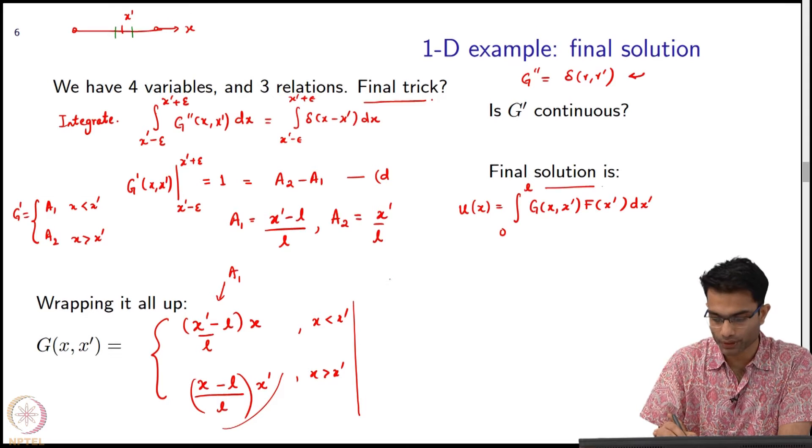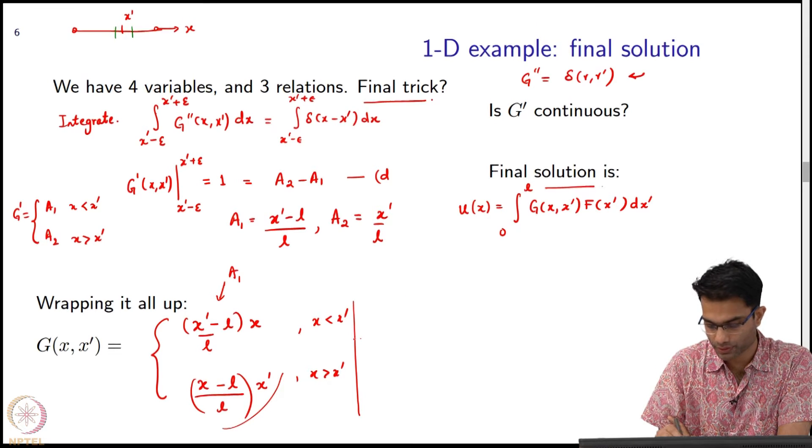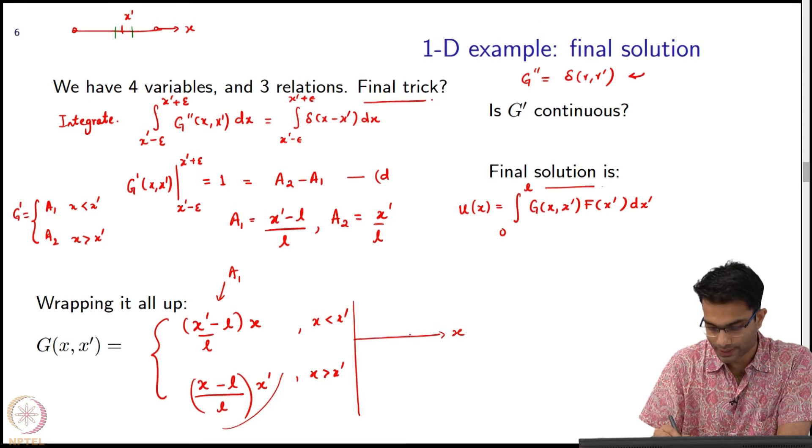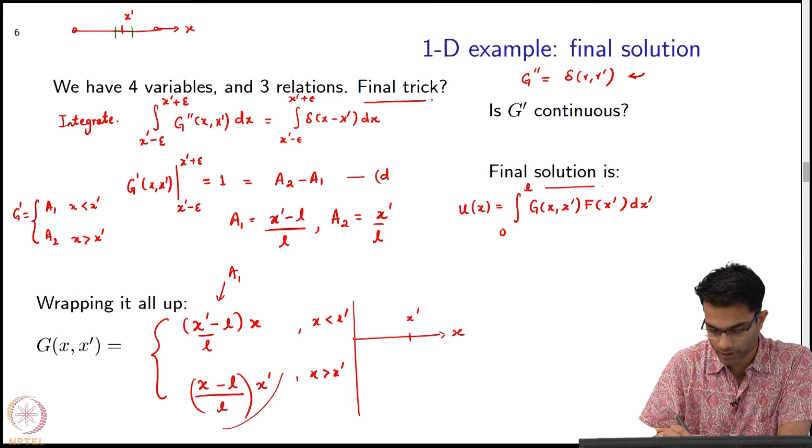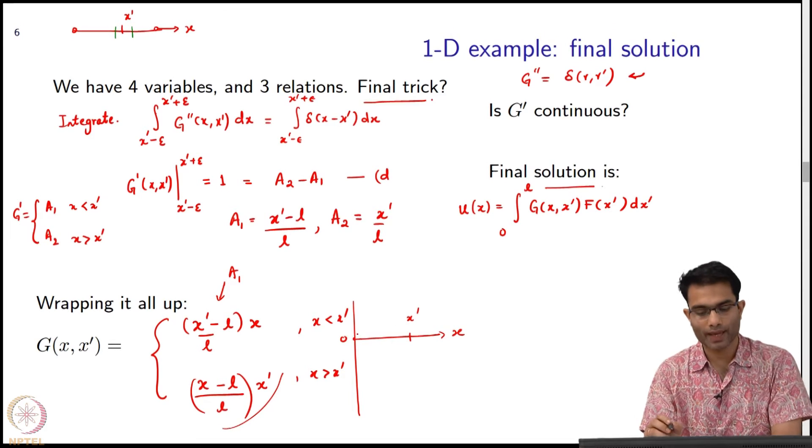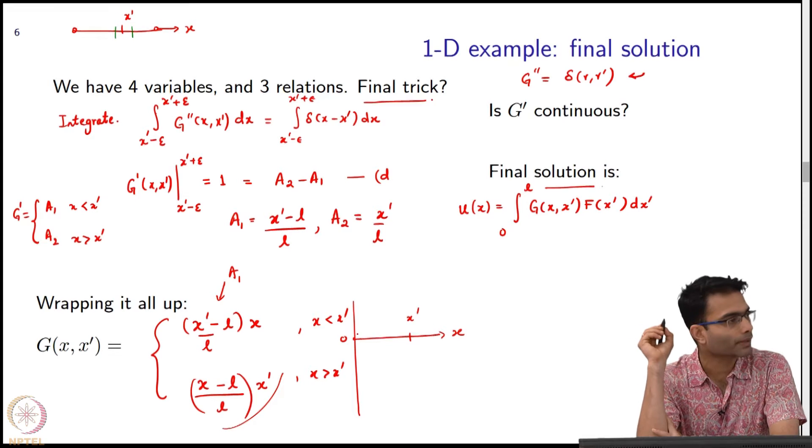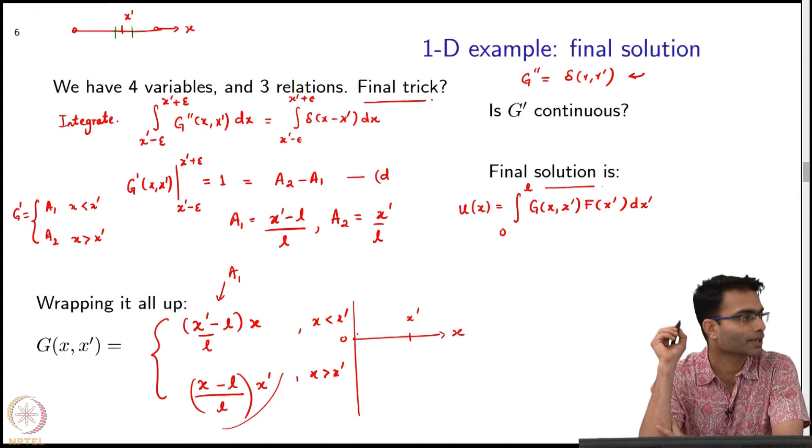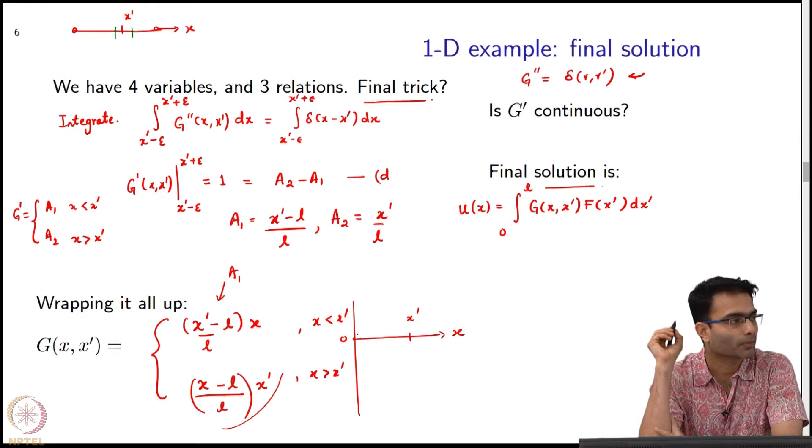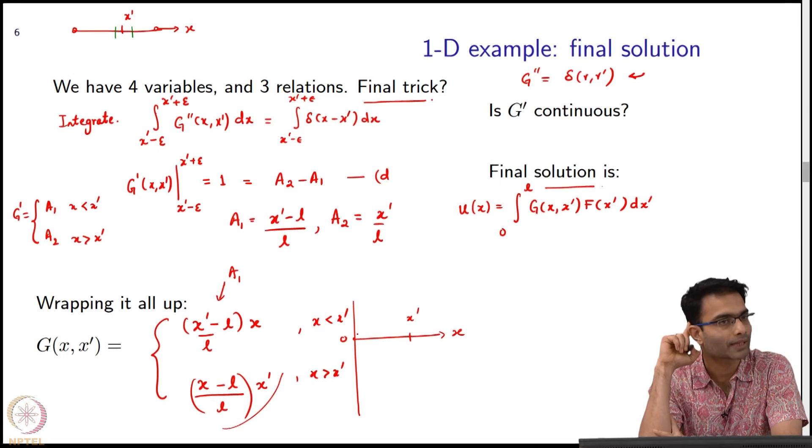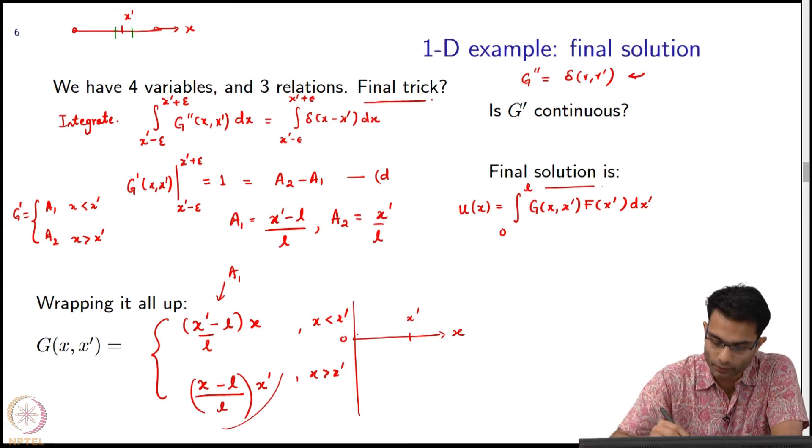Let us just plot it. This is my x-axis, and let's say this is x prime. This is my 0. For x less than x prime, what does it look like? Both are straight lines—the slope is negative because x prime is less than L. It's a line going down like this.